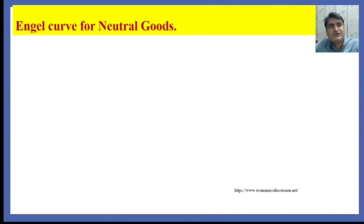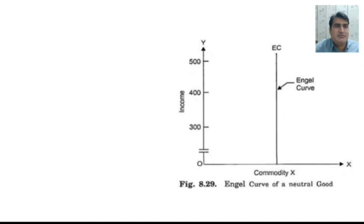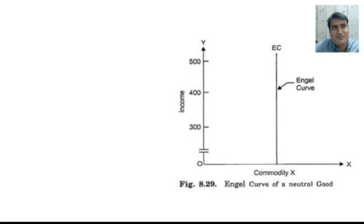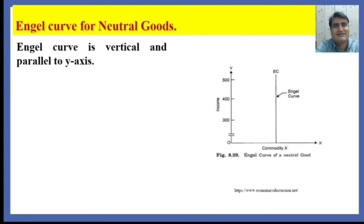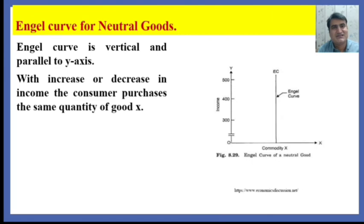The Engel Curve for neutral goods: whether income increases or decreases, the demand for commodity X remains the same. Neutral goods are those goods where an increase or decrease in income does not change the demand for such goods, such as the demand for salt or medicine. With increase or decrease in income, we do not increase the demand for salt or medicine. The Engel Curve is vertical and parallel to the Y axis. With increase or decrease in income, the consumer purchases the same quantity of commodity X, and the good is a neutral good.